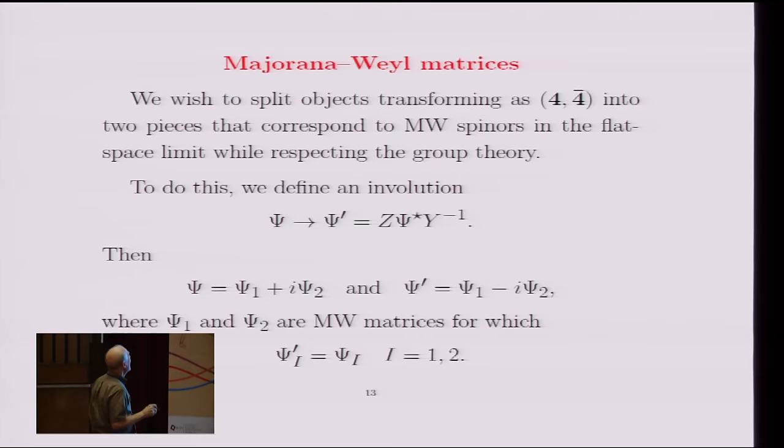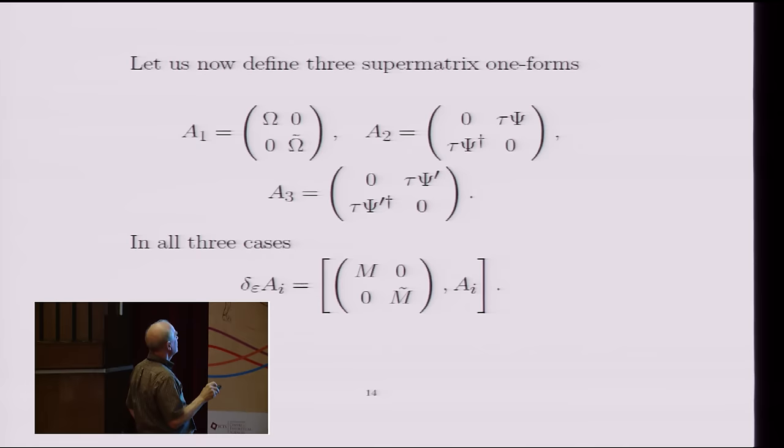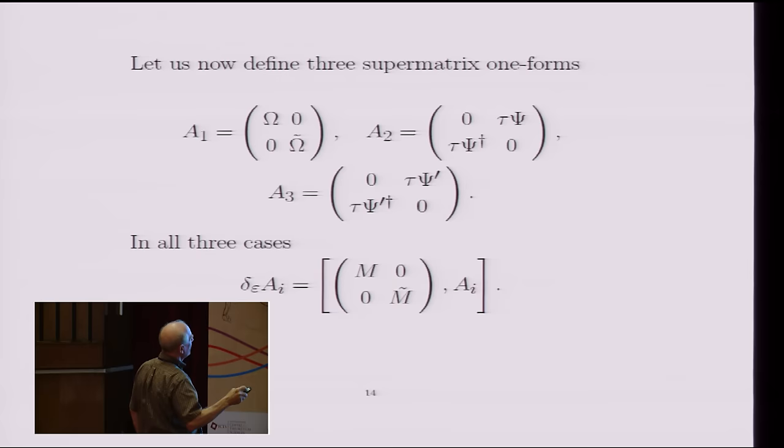So now what I do is to define three different supermatrix one-forms. So I've introduced omega and omega tilde before. We had trace of omega squared minus trace of omega tilde squared in the metric. So it's obvious I'm going to have a supermatrix that looks like this. And then I had psi, which was the one-form that appeared in gamma inverse d gamma. It appeared in the off-diagonal blocks. These were the off-diagonal pieces of that thing I called A previously. And then we have these transformations that I just showed you, which would give you the primed versions of these things. So I define these three supermatrices. And each of these things under supersymmetry transforms in this way.